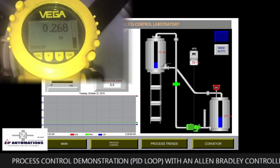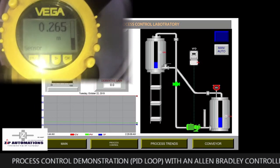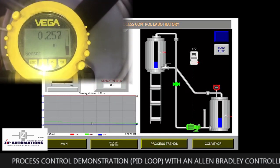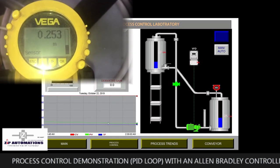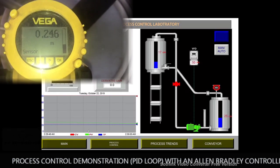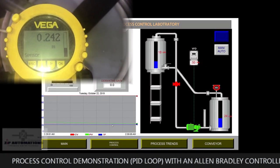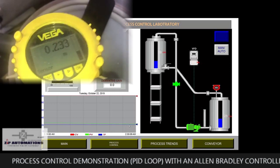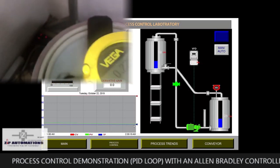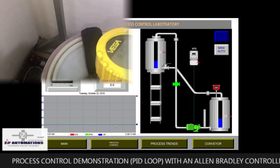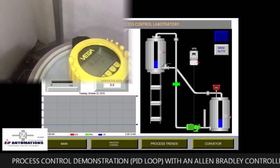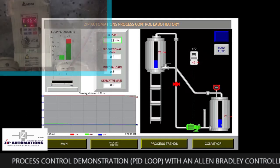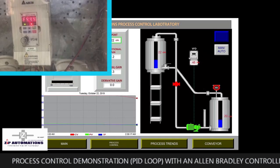We can see the level is reducing. This green line here is the process variable and it's trying to get to the set point of 22cm. I've gotten to the set point. You can see the VFD is ramping down, trying to shut it down.